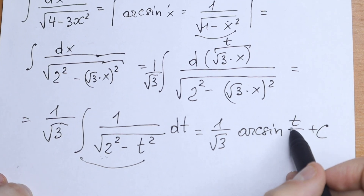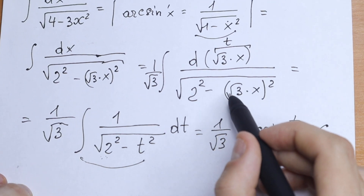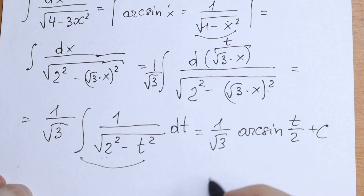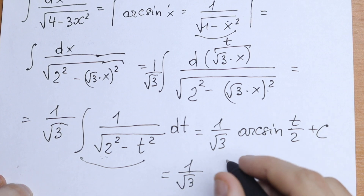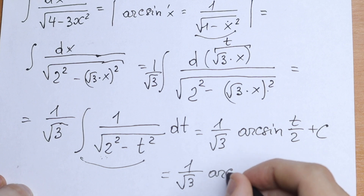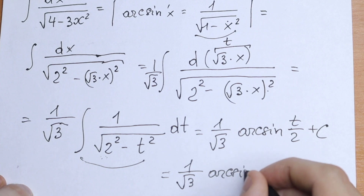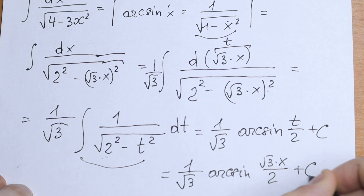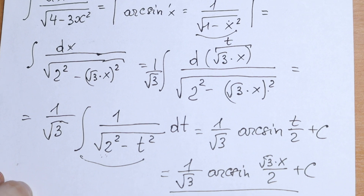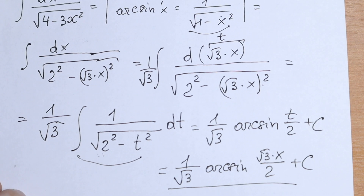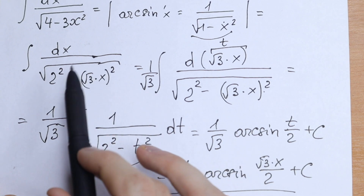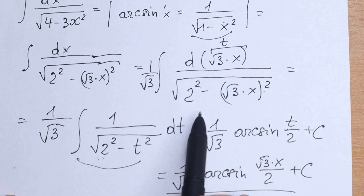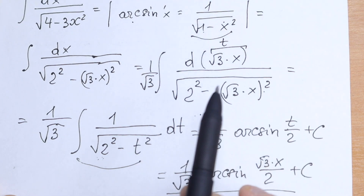Now let's put square root of 3 times x back in place of t. We will have our final formula: 1 over square root of 3 times arcsin(square root of 3 times x over 2), plus C. And this will be our integral.